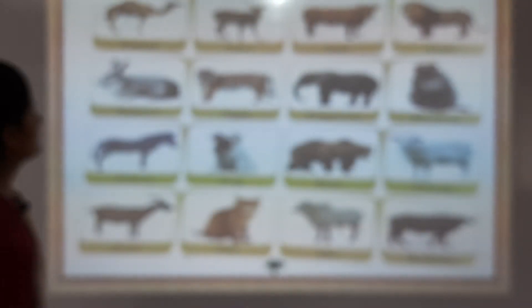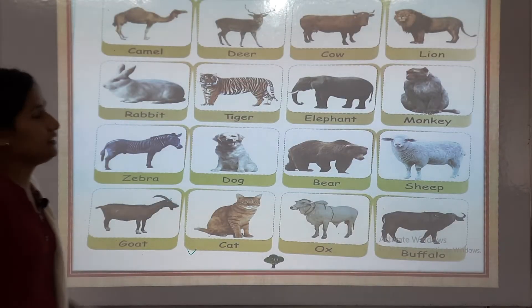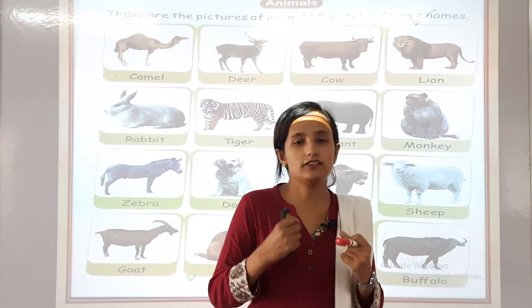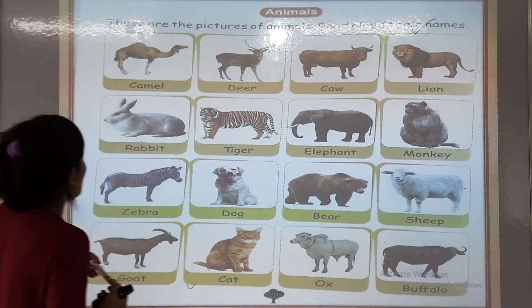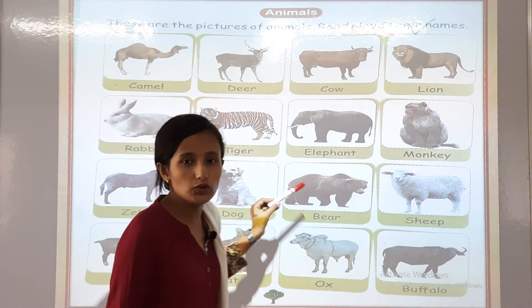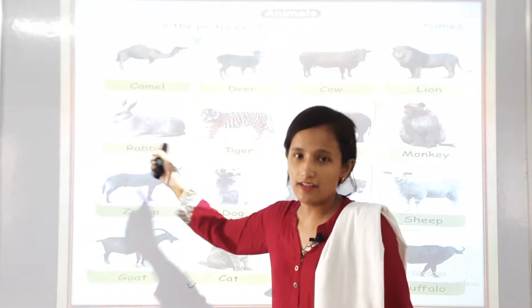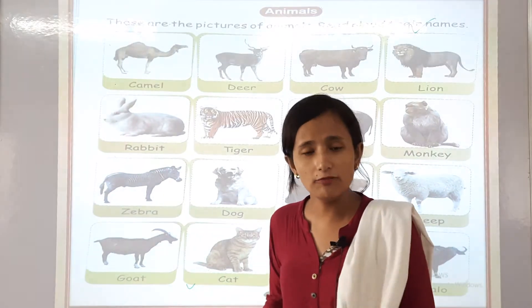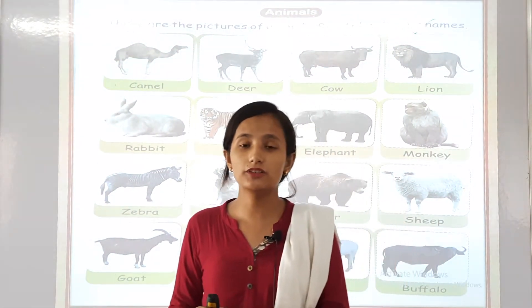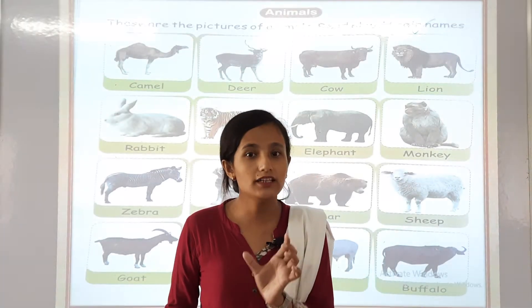Next page, you can see animals. These are the pictures of animals. Read aloud their names — ham log ko zor se padhna. We can read their names like camel. They have their names, so those who have their names we can call them a noun. Noun because noun is a naming word. Jiska naam hai usko ham log kya bolte? Noun.